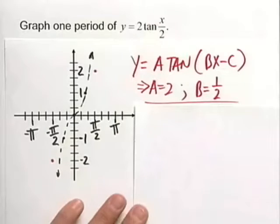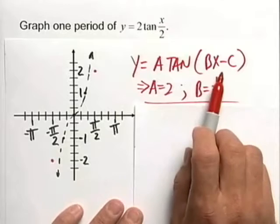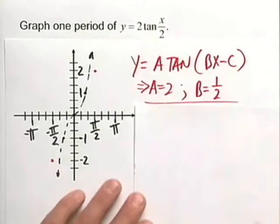Now that we have a and b, let's go ahead and find our vertical asymptotes. The formula for our vertical asymptotes is bx minus c equal to pi halves.